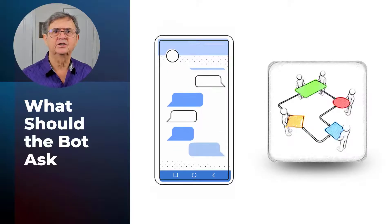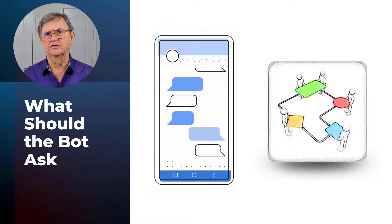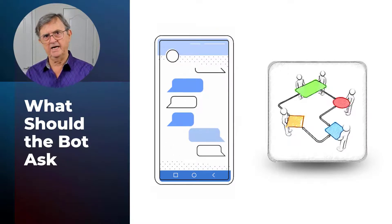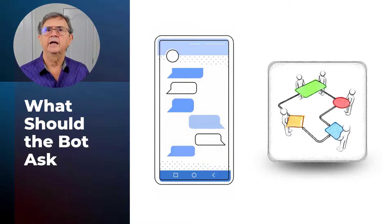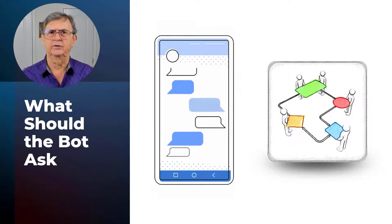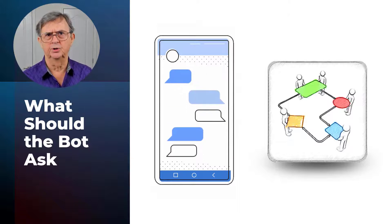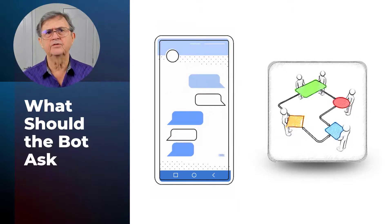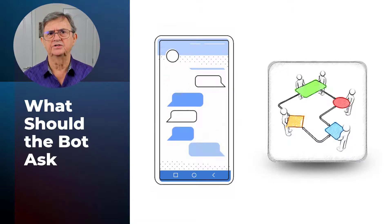When you design a directed chatbot, you have to make a conscious decision about the flow every step of the way. What should the bot ask? What answers should the bot expect? And what do you expect the user to understand — what's their language? This is the essence of conversation flow. If you're dealing with a bot, the conversation flow has to be designed to achieve the desired outcome.